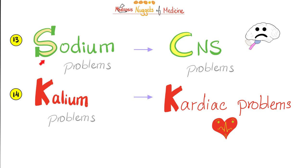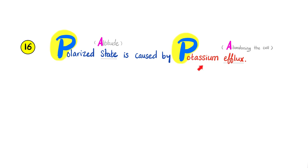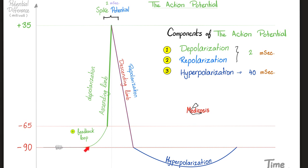Check my previous videos on the Nernst and Goldman equations. Sodium problems cause CNS problems; potassium and calcium problems cause cardiac problems — the rule of fours for serum electrolytes. During the polarized state, potassium efflux is the hero. At the threshold (the firing level), all sodium channels open — the spike. Depolarization is driven by sodium influx; repolarization by closing sodium channels and opening potassium channels. Hyperpolarization follows due to excessive potassium efflux, because potassium channels are slow to close.